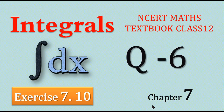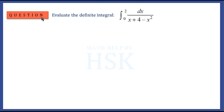Question number 6 of exercise 7.10. Evaluate the definite integral: integration of 1 upon (x + 4 - x²) dx from the limits 0 to 2.